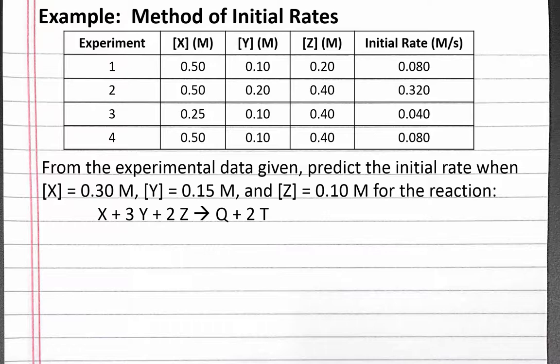We're also given the experimental data in the table for four experiments with different starting conditions. When we set up experiments for the method of initial rates, we want to systematically change the concentration of one reactant at a time to determine what effect the change has on the overall initial rate of the reaction. This allows us to isolate the effect on rate for each reactant.